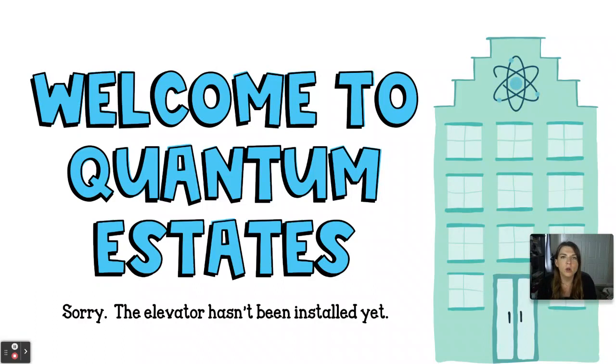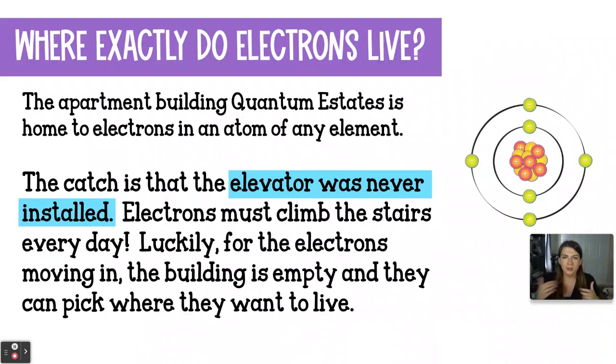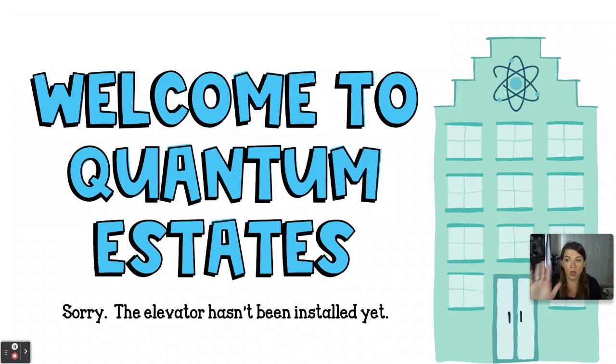I have formulated all of this into an analogy. Welcome to Quantum Estates, which is an apartment building where the elevator shaft exists, but there's no power. The elevator hasn't been installed yet. So when electrons are choosing which room they want to live in inside of Quantum Estates, they are going to have to climb the stairs. This apartment building is the home to electrons in an atom of any element. It may represent an atom of neon, silver, or chromium, doesn't matter.